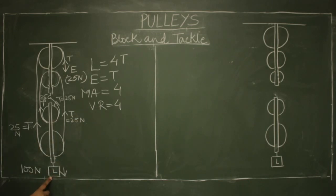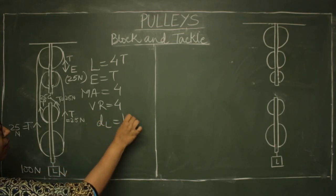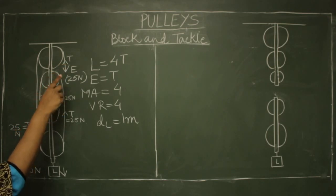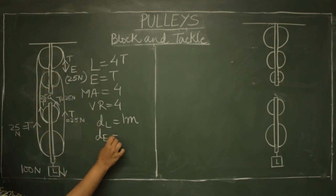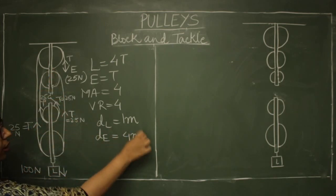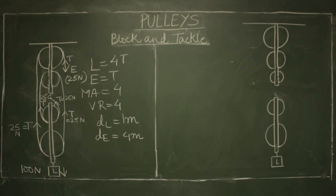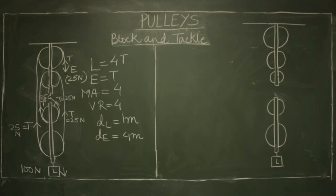A velocity ratio of four means that if you want to displace the load by one meter, you will pull the rope by four meters — that is a loss of speed. The greater the mechanical advantage, the lesser the force you apply, but the greater the distance the effort needs to move to shift the load by a certain value. So that is the block and tackle system of four pulleys.